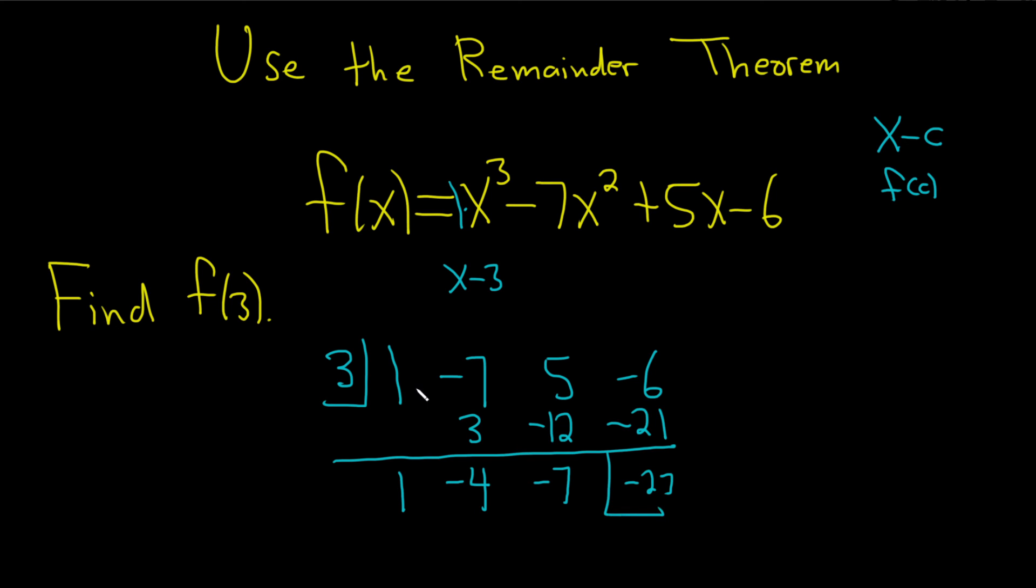Let me just check that. 1 times 3 is 3, add to get negative 4. Negative 4 times 3 is negative 12, add to get negative 7. Negative 7 times 3 is negative 21, add to get negative 27.